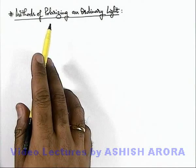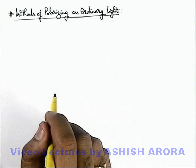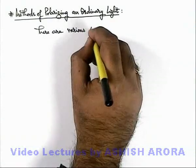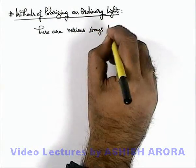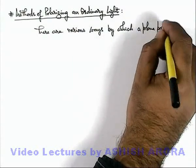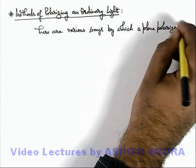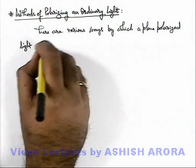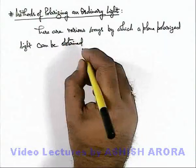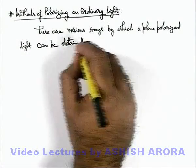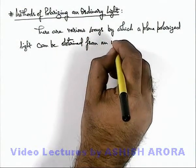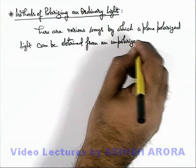Now we'll study the methods of polarizing ordinary light. There are various ways by which a plane polarized light can be obtained from an unpolarized, or ordinary, light.